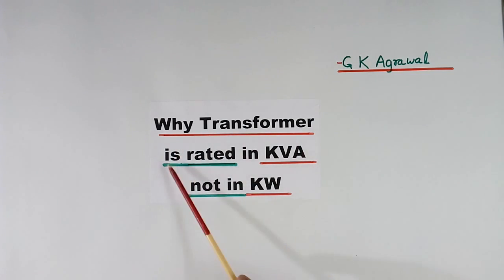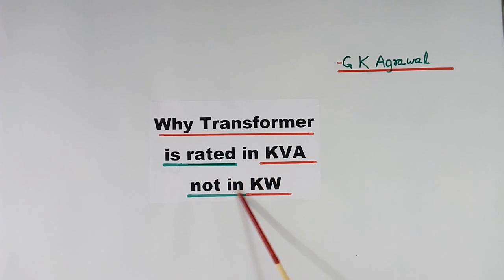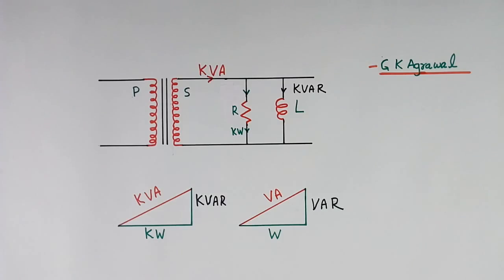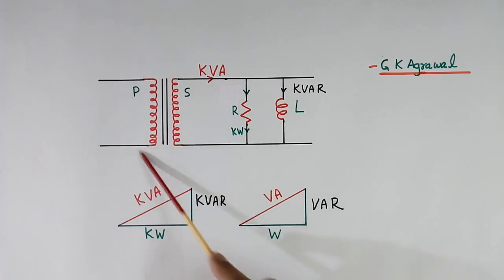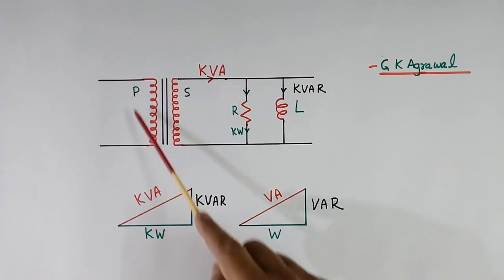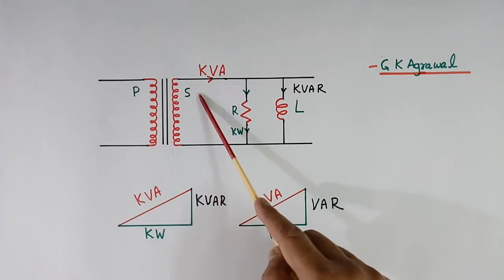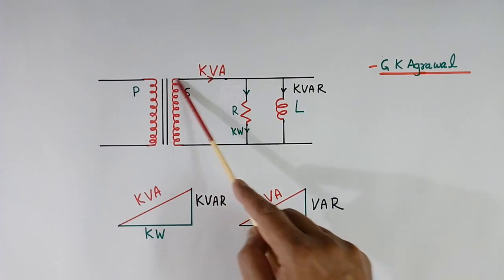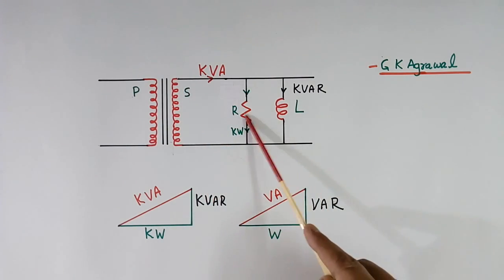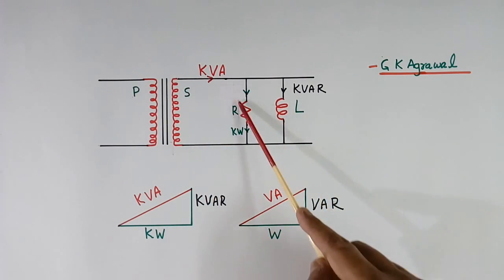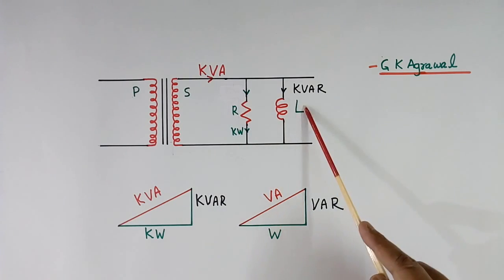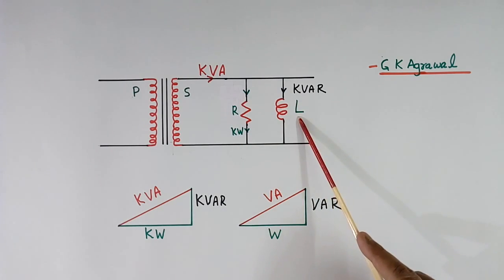Today I will explain why a transformer is rated in kVA, not in kW. Here I have shown one transformer — this is the primary, this is the secondary. This transformer has two loads: one is a resistive load, and another is an inductive load.